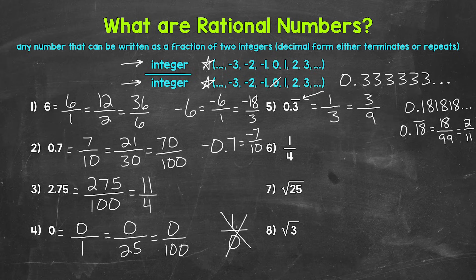For number six, we have 1 fourth. This is already a fraction — the numerator is 1, which is an integer, and the denominator is 4, which is an integer. So this is rational. Looking at the decimal form as well, 1 fourth equals 0.25, which is a terminating decimal. So we can see it's a rational number that way as well.